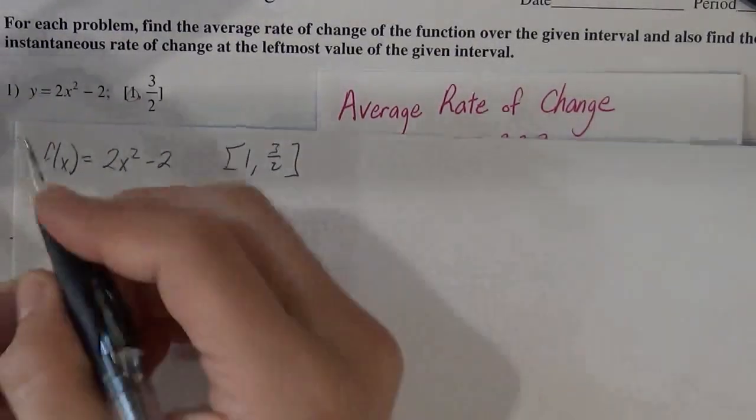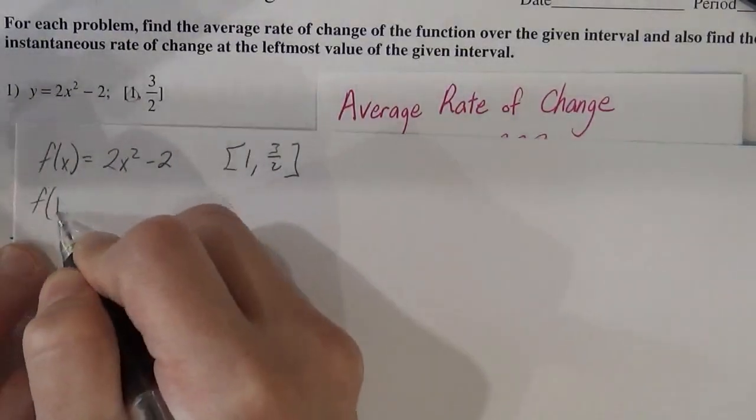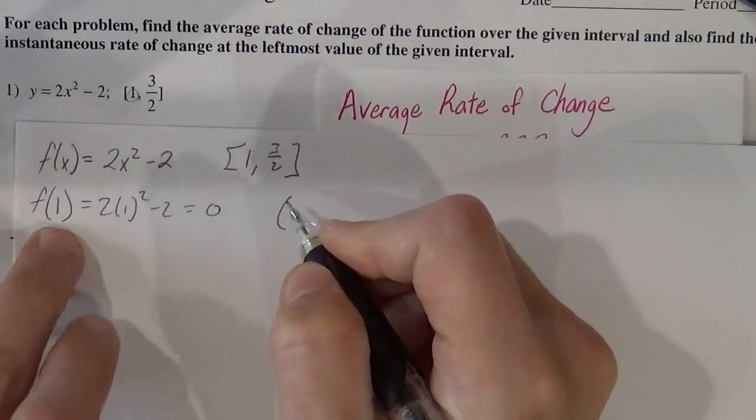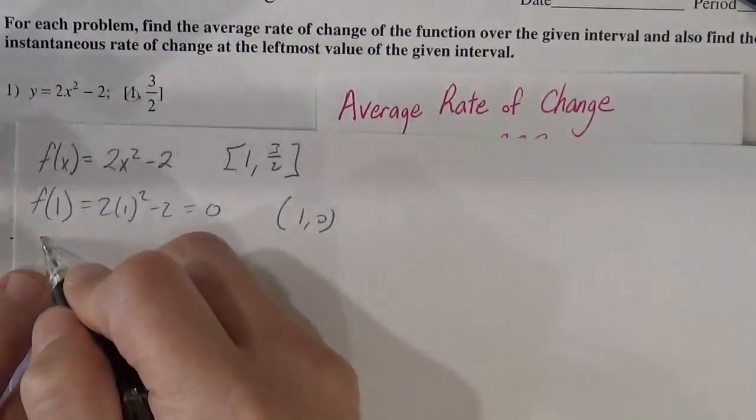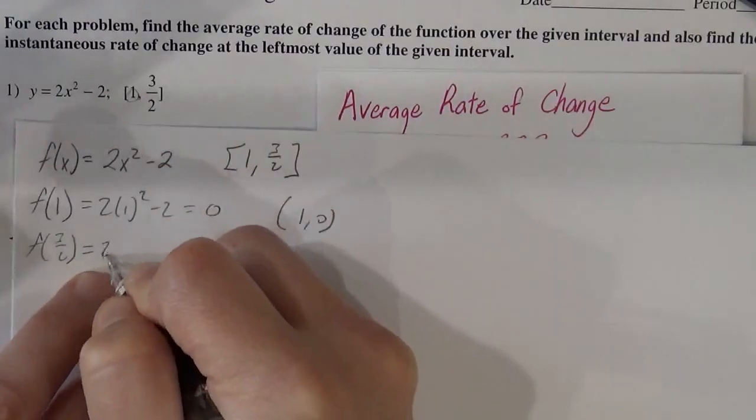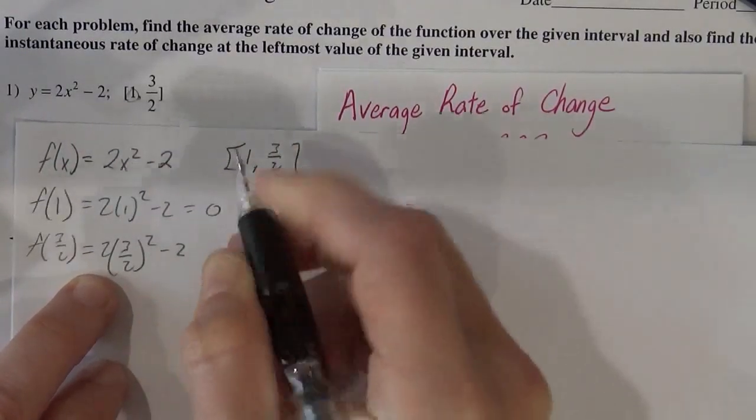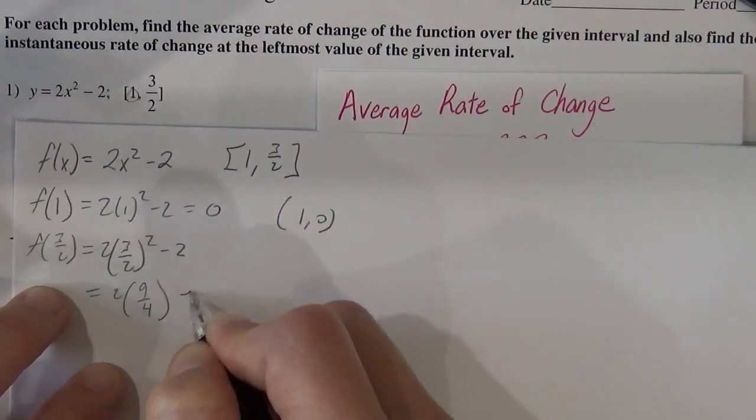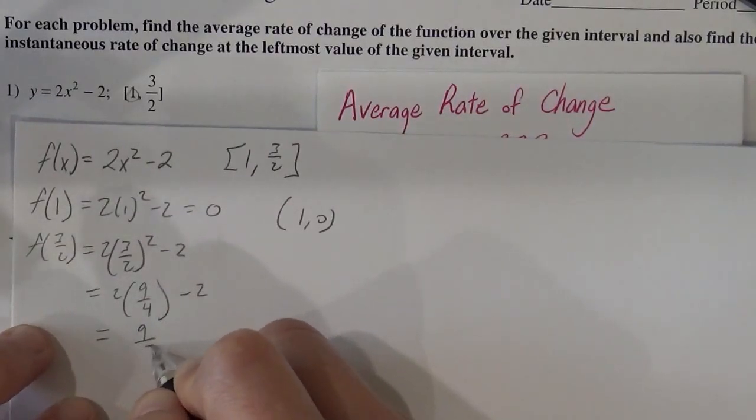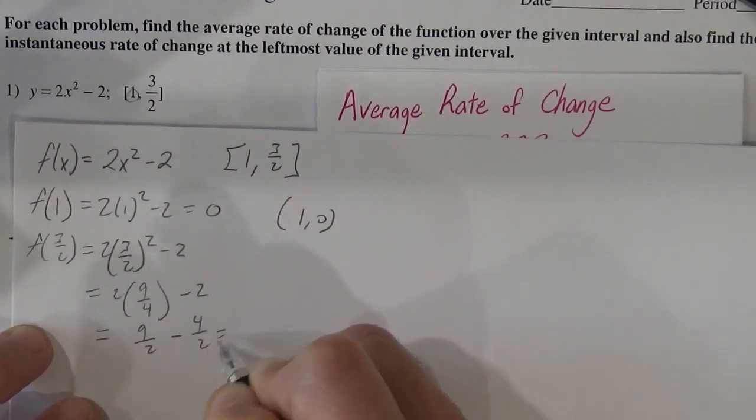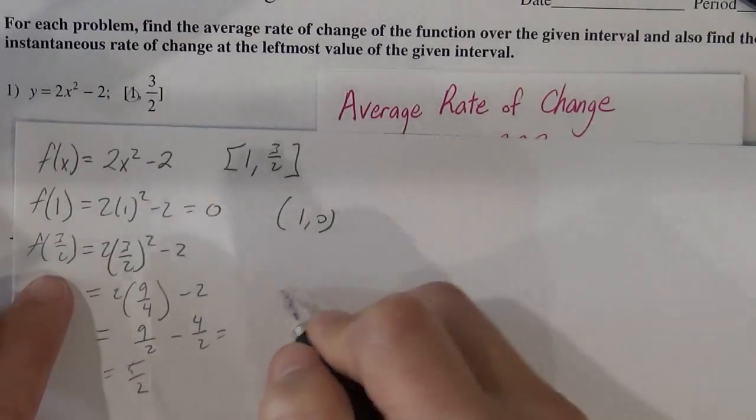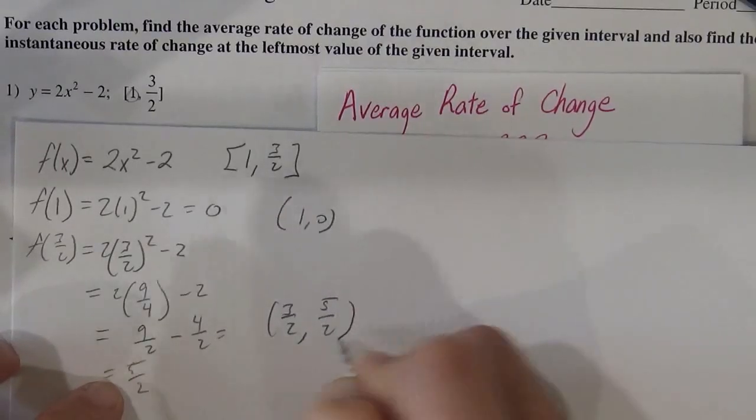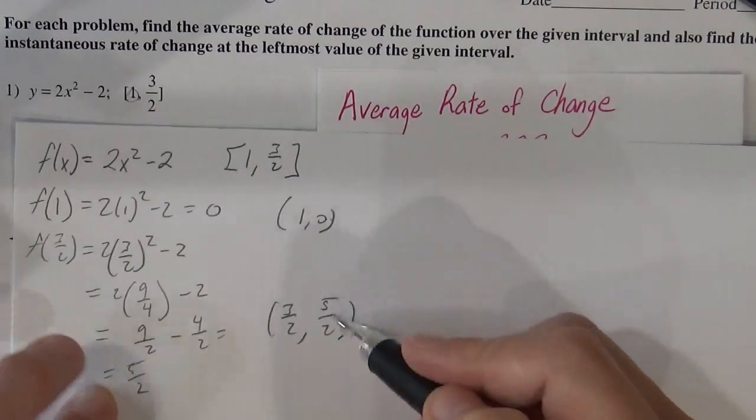So we've got our function here. I'll plug in both points. I'll plug in 1 so I get 0. So I have the point when x is 1, the y is 0. And when I plug in 3 halves, 2 times 3 halves squared minus 2. So that's 2 times 9 fourths minus 2, which is 9 halves minus 4 halves is 5 halves. So when x is 3 halves, the y is 5 halves. And those are my two points.